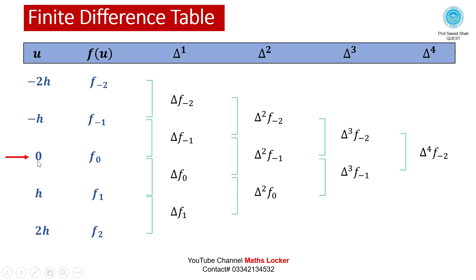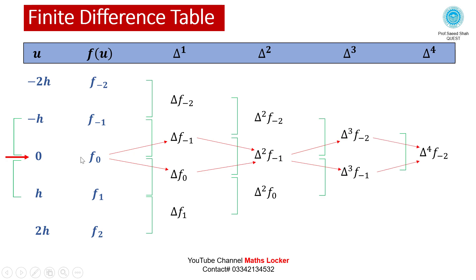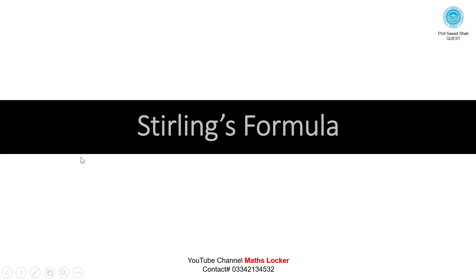Mark 0 as the center of the table. If the data lies between the interval values minus h and 0, or between 0 and h — that is, near to 0 — then we draw the diagonals in the finite difference table before applying the Stirling formula.